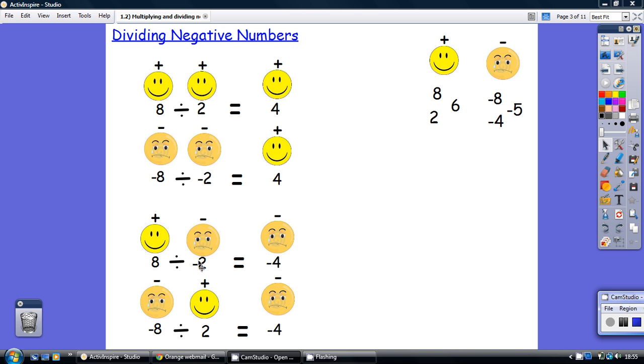However, with the two situations where you've got differing signs, you've got people of different character. 8 divided by minus 2, but also minus 8 divided by plus 2, both give you a sad minus 4.